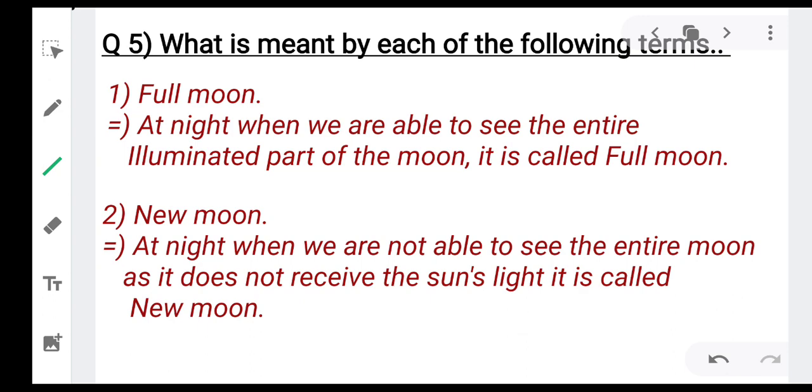Now question number five, what is meant by each of the following terms? Now full moon, number one full moon, what is full moon? At night when we are able to see the entire illuminated part of the moon, it is called full moon.